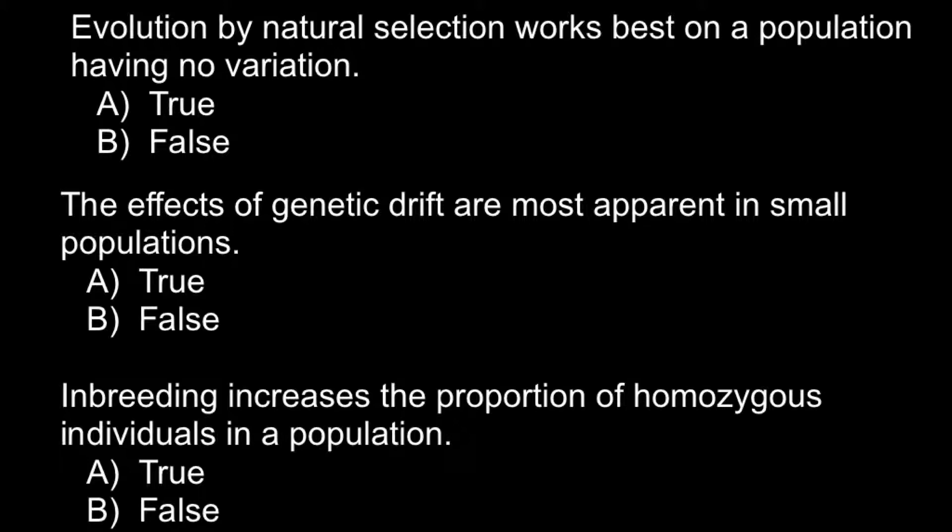So here is the first question. Evolution by natural selection works best in a population having no variation. And this is a false statement because in order for evolution to work, there should be some variation in the population.